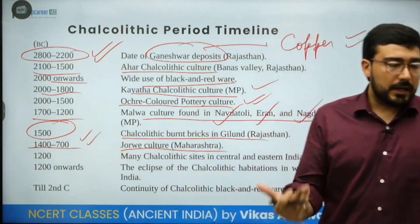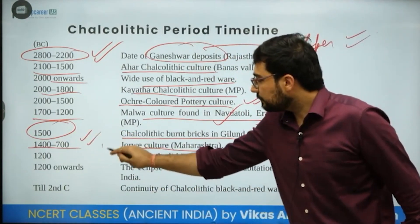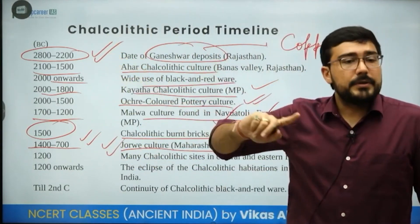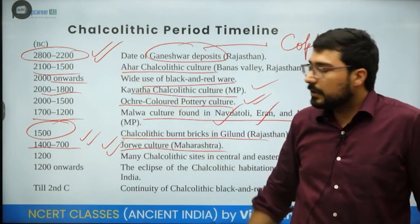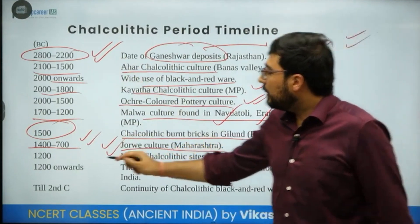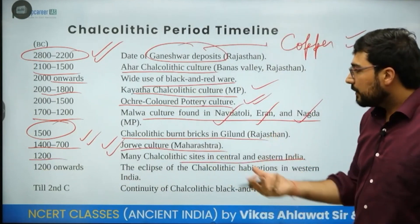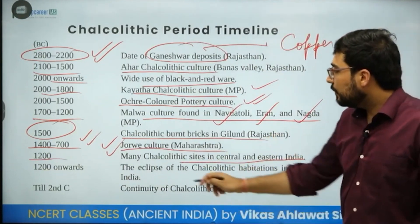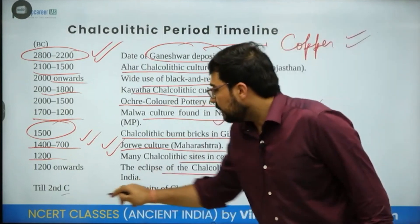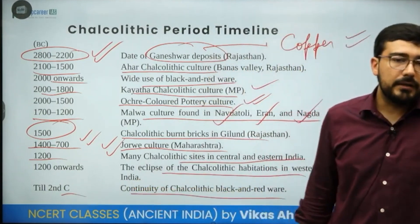Jorwe was one of the last Chalcolithic cultures to remain in place — it continued up to around 700 BC. From 1200 BC onward we have many Chalcolithic sites in central and eastern India, and Chalcolithic habitation in western India saw an eclipse after around 200 years, while in other areas it continued with the use of black and red ware into the second century.